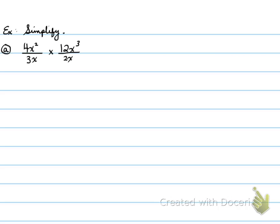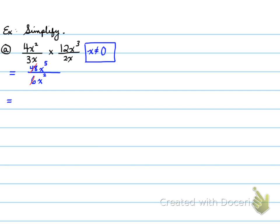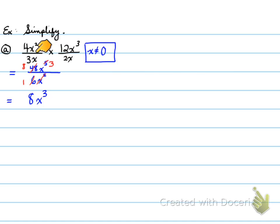The first example has a simple product of two rational expressions, and the rational expressions here are simplified to the point of factoring. We multiply the numerators together and the denominators, then state the restrictions. The restriction means that x cannot equal 0. Then we cancel: 48 divided by 6 gives you 8, and x to the 5th cancels with x to the 2nd to give us x cubed. The final answer is 8x to the power of 3.